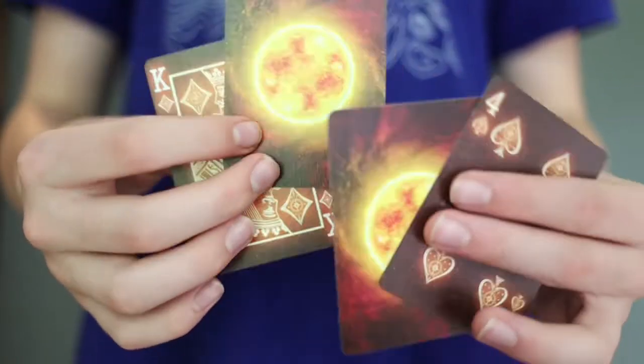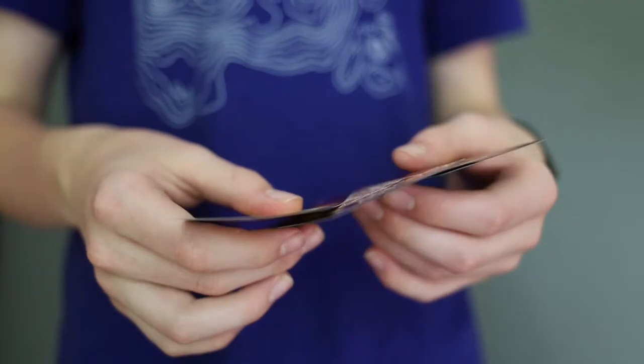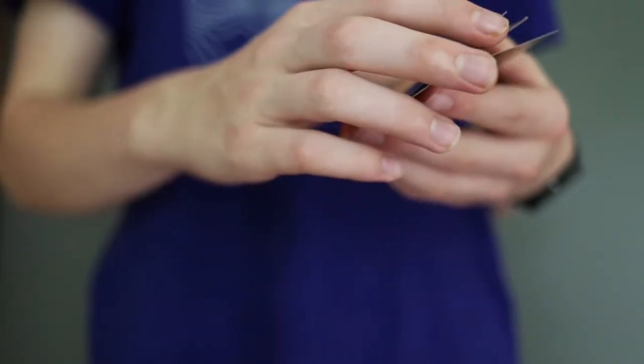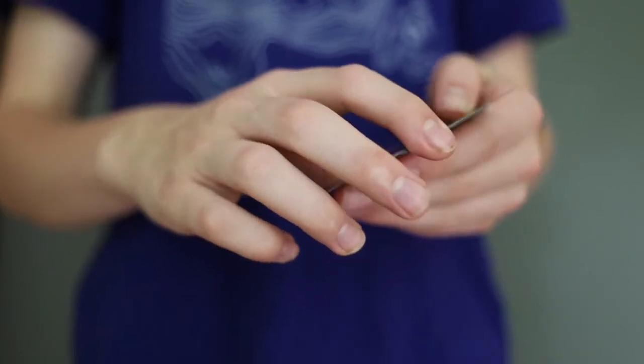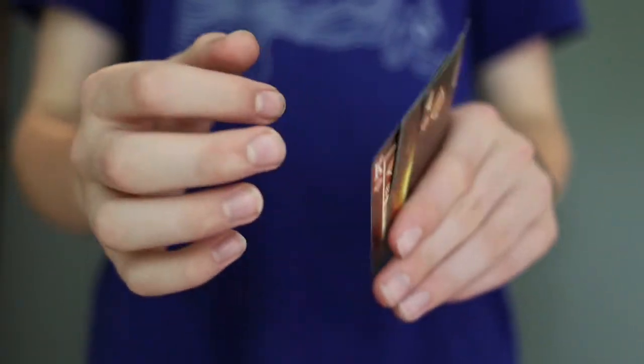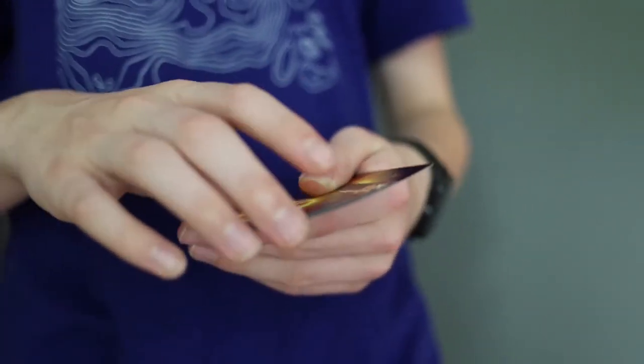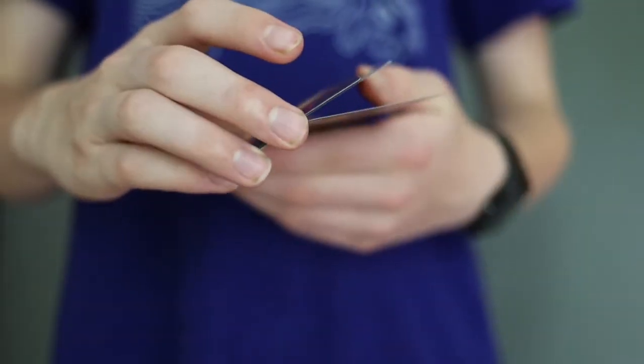So now to move into the disappearing part of it. So after you've done the color change, you'll be in this position, with the two face-up cards squared together in the middle of these sandwiched cards.